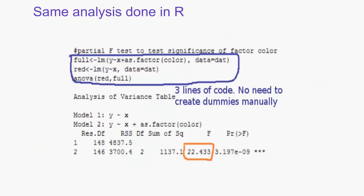R users have an easier time. Here's the code to do it in R. Run both full and reduced models, then use the command ANOVA to run the partial F-test. The command as.factor tells R the variable color is a factor, and R will automatically create the dummies, unlike in SPSS. The p-value for the test is 3 times 10 to the minus 9, which is less than 0.01, so we have very strong evidence against the null.